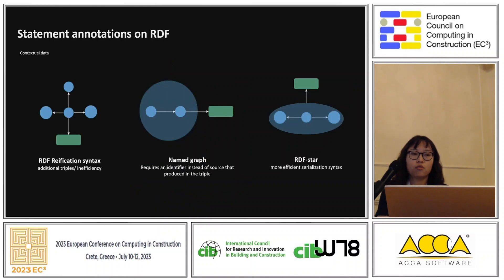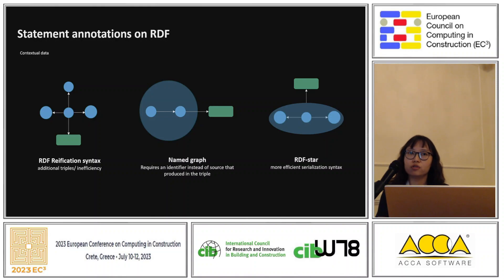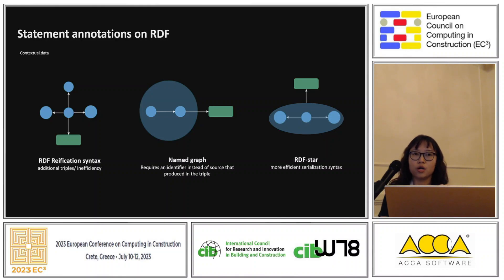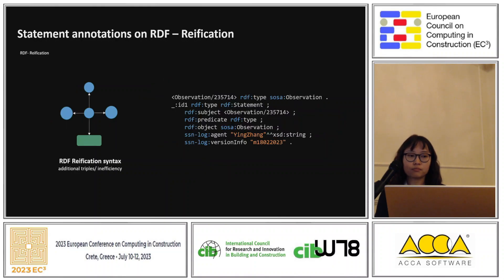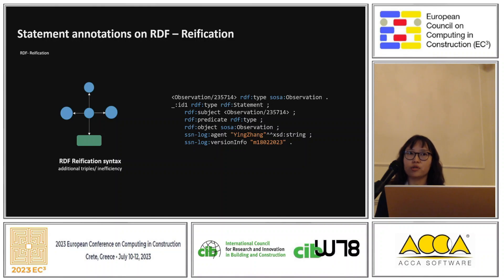Going back to the annotations on RDF — the RDF format was proposed from the beginning with data federation in mind, and all kinds of data can be converted to a set of triples. As RDF evolved, various syntax forms were proposed to add annotations on RDF. The first is RDF reification syntax, which is not very efficient, as it requires three additional triples to refer to the original triple when adding metadata.